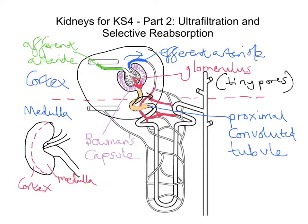So in summary: ultrafiltration happens in the glomerulus and Bowman's capsule, and selective reabsorption happens in the proximal convoluted tubule.